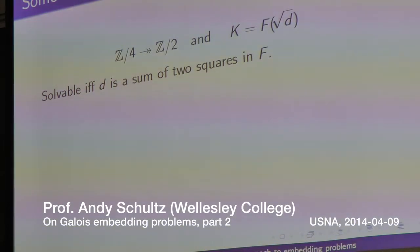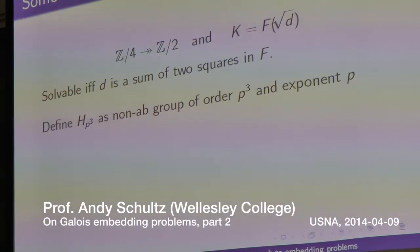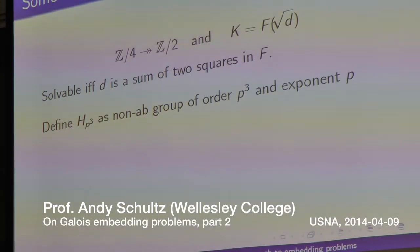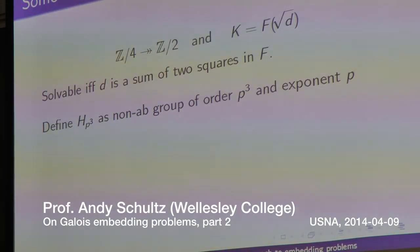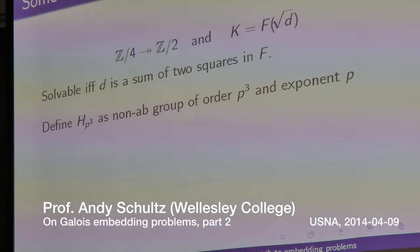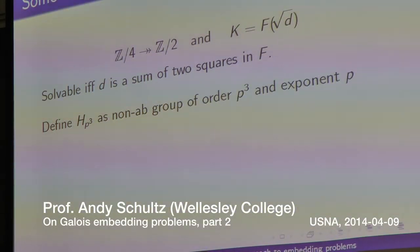I'll do two more examples; these are slightly more complicated. HP cubed, the Heisenberg group, is the non-abelian group of order p cubed that has exponent p. There are two non-abelian groups of order p cubed: one has exponent p, and one has exponent p squared. Here's the one that has exponent p.